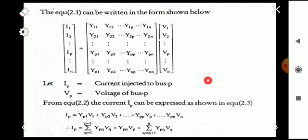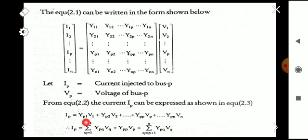From the matrix equation, the current Ip can be expressed as: Ip = Yp1·V1 + Yp2·V2 + ... + Ypp·Vp + ... + Ypn·Vn. This is just matrix multiplication. We can write the Ip equation as: sigma (q=1 to p−1) of Ypq·Vq, plus Ypp·Vp, plus sigma (q=p+1 to n) of Ypq·Vq.